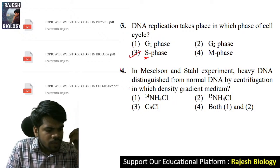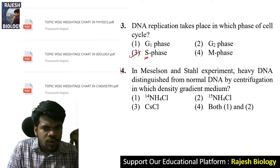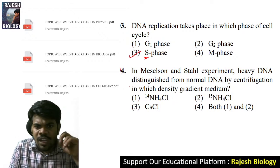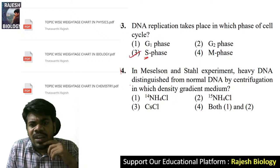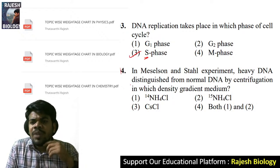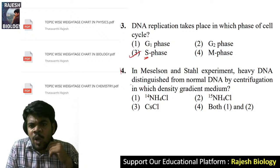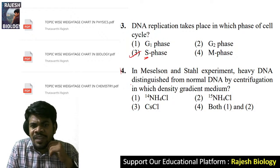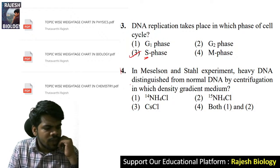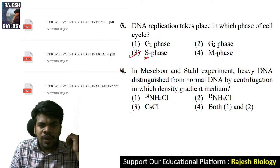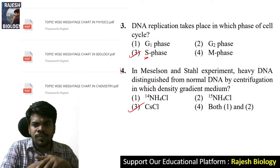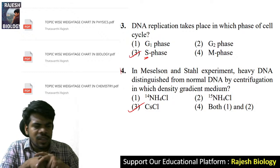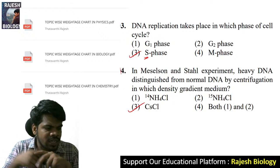In the Meselson and Stahl experiment, heavy DNA is distinguished from normal DNA by centrifugation in which density gradient medium? The right answer is CsCl — not both one and two. The answer is option three.